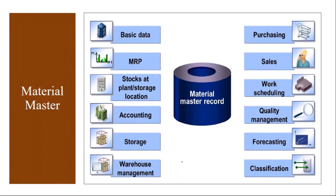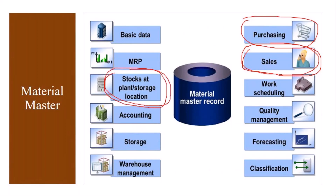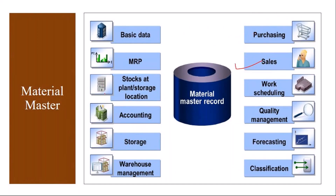The finance team maintains their data in accounting views. From a CS perspective, the sales view is important because we are going to sell the product. The purchasing view is also important because some spare parts required for repair activity need to be purchased. The plant storage view is also important, where you maintain the serial number profile for serialization.